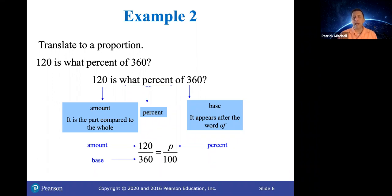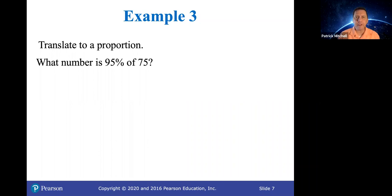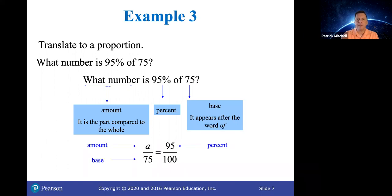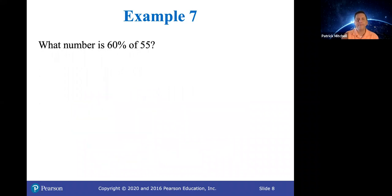While I'm thinking about it, let me just point out one advantage of doing it this way over doing it as an equation is that if the unknown number is the percent, you will not have to convert it from a decimal into a percent. It will automatically come out as a percent. So you'll see that in an example here. Here's another one. Go ahead and try this one if you're feeling frisky. What number is 95% of 75? So this time, what number is the amount. 95 is the percent. And because it comes after the word of, 75 is the base. So amount over base equals percent over 100 looks like this.